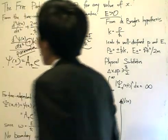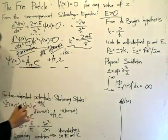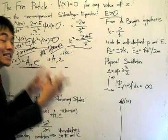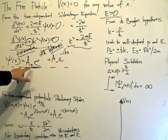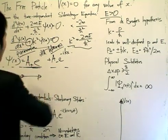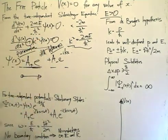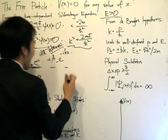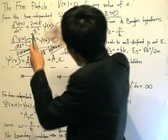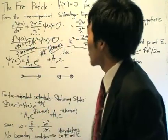Since it is a second-order differential equation, these two solutions will be linearly independent. For this solution, e^(ikx) represents a wave moving to the right, and e^(−ikx) represents a wave moving to the left. So we solve and get the wave function, and this is what we need to interpret from the solution.